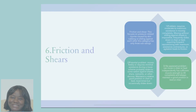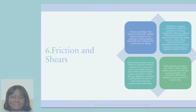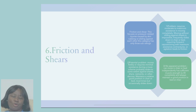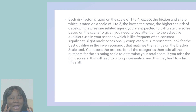The last category is friction and shear, which has a rating of one to three. It's either the patient has a problem with the skin, a potential problem, or no apparent problem. That's all on friction and shear. Now you do a total score of each category and arrive at your score rating for your patient.